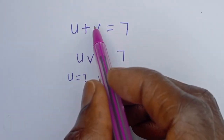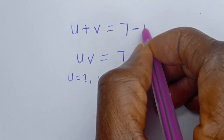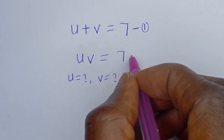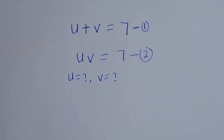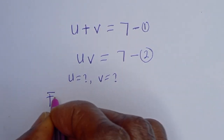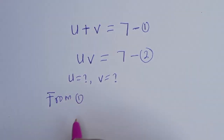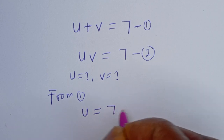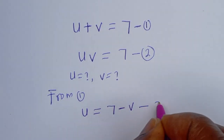Now here, we have u plus v is equal to 7 — let's call this equation 1. Then uv is equal to 7 — let's call this equation 2. From equation 1, u is equal to 7 minus v. Let's call this equation 3.